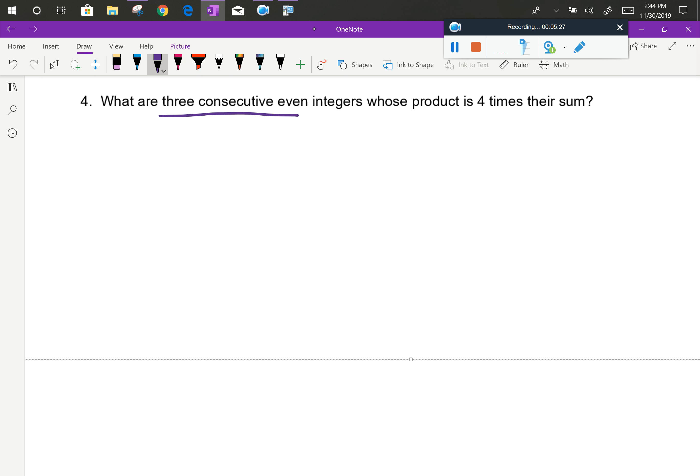Okay. First of all, three consecutive even integers, so like 2, 4, 6, or 22, 24, 26, or even negative 8, negative 6, negative 4, just any three integers that all are even and in a row. So if you think about that, each number is two bigger than the number before it.